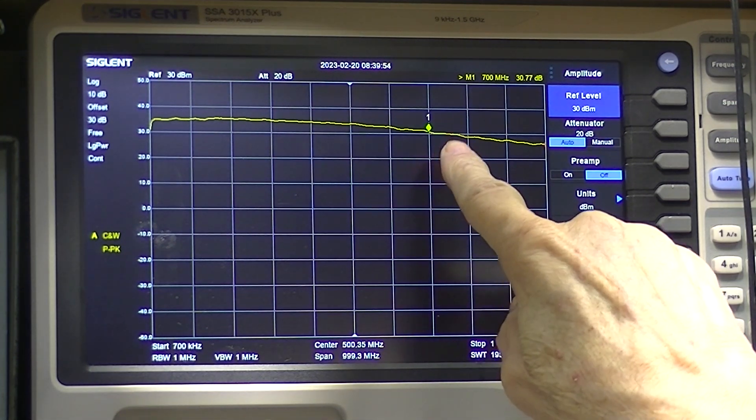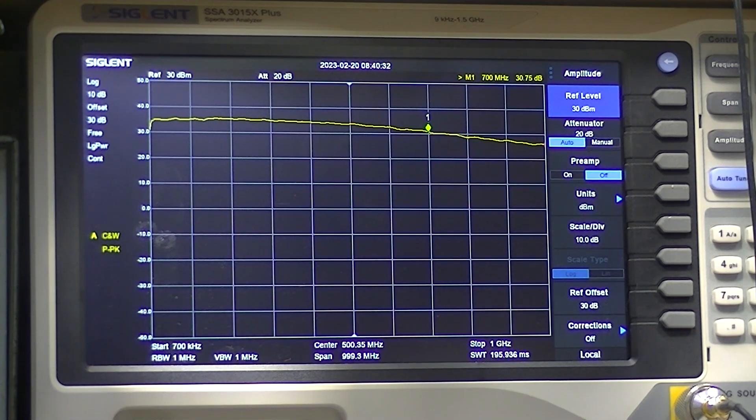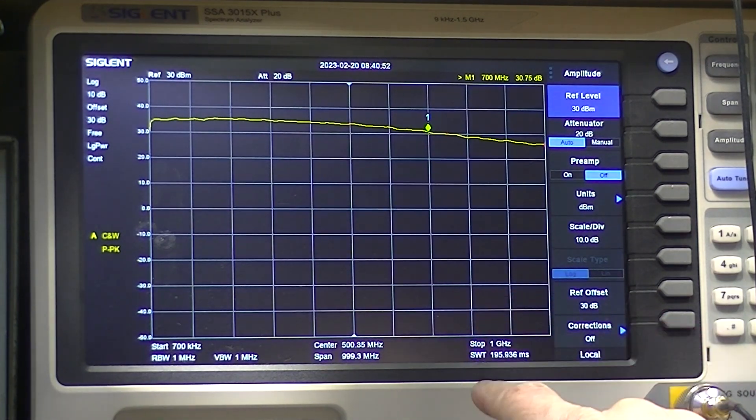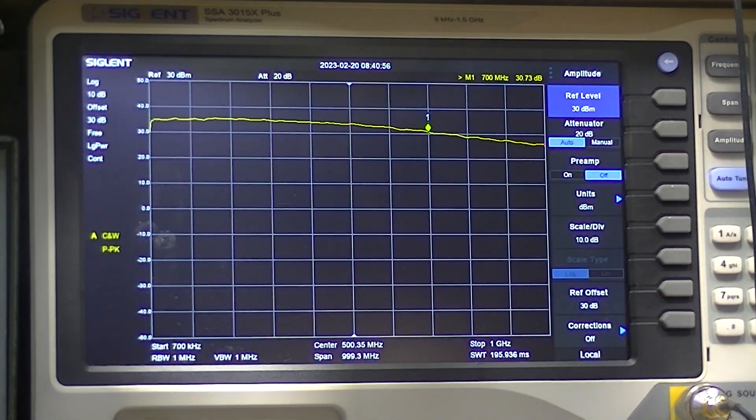I'm sweeping from 700 kilohertz to a gigahertz. And the marker is set at 700 megahertz. The output was 3 watts. And the system was to have at the low end 35 dB of gain. We have an output at 700 megahertz of 30.1 decibels.